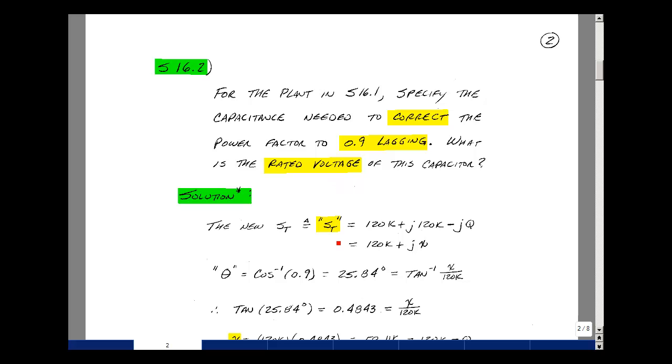We had complex power in the previous supplemental problem to be 120k plus j120k. Now we're trying to create a new value for that complex power to raise our power factor. We're going to need to reduce the value of the imaginary part. So let's say minus jQ. Let's just call this X for right now.